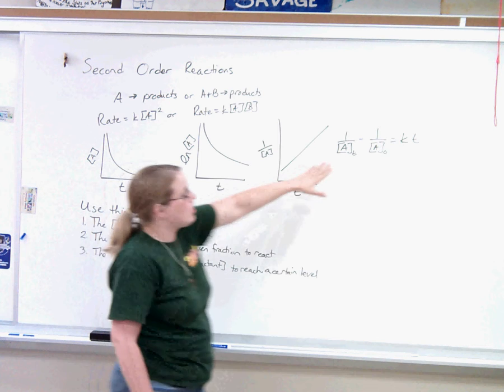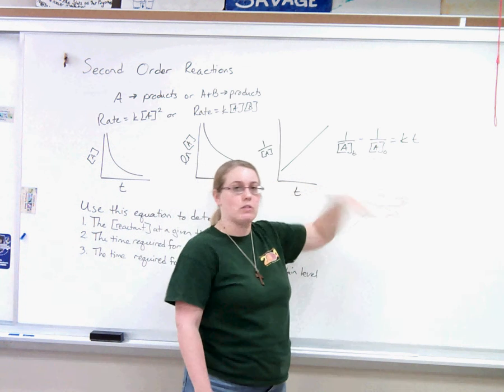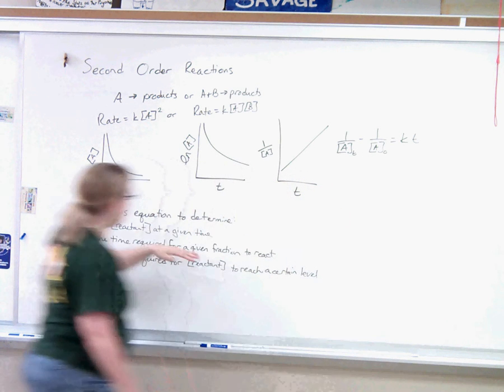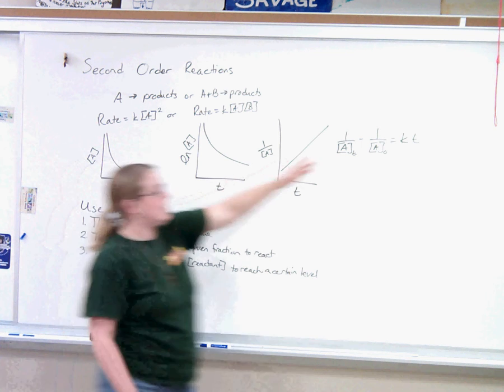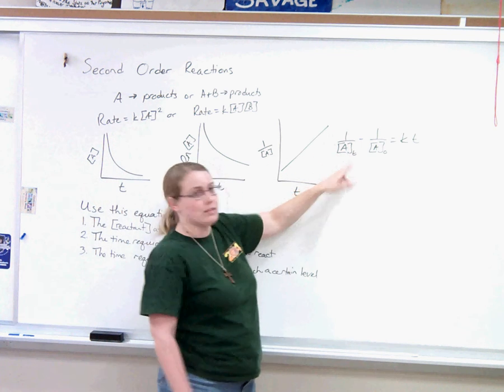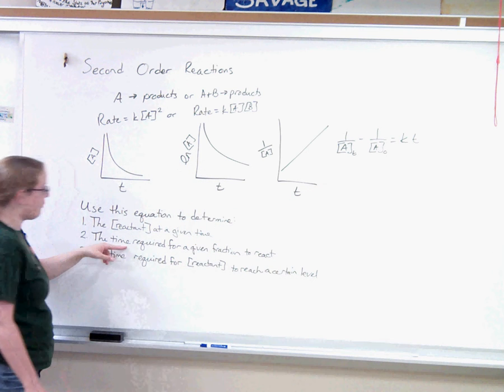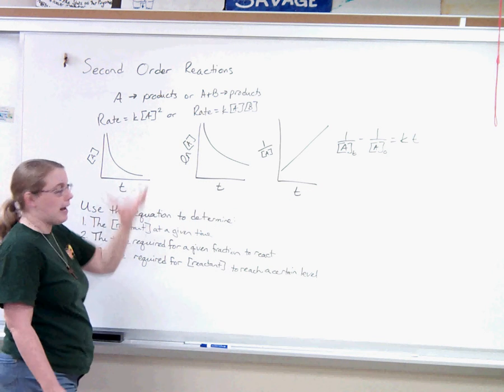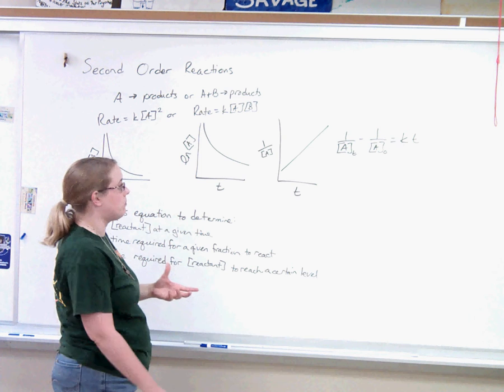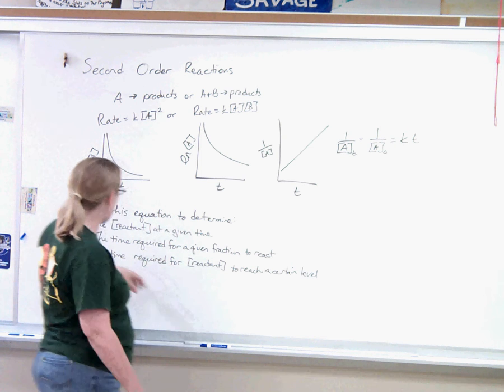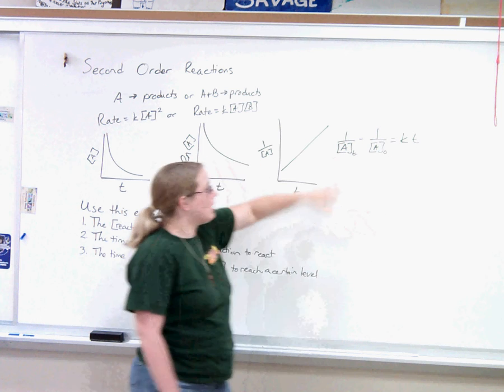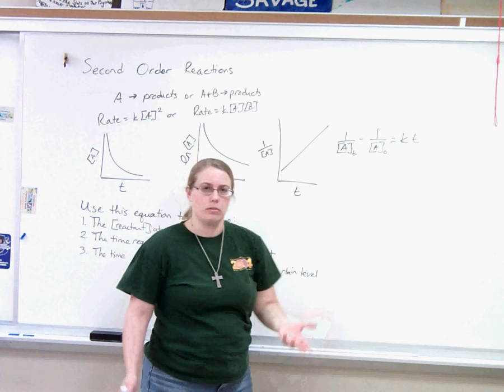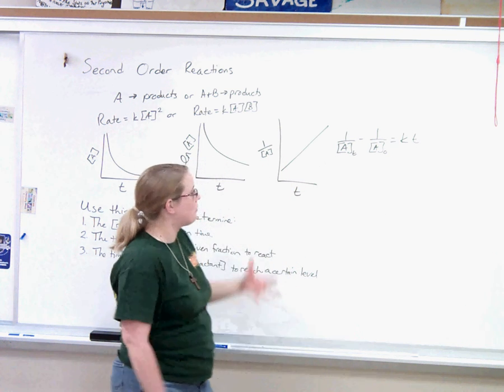We use this equation the same way we use the natural log equation for first-order. We can use it to find the concentration of the reactant at some time. So if we know what t is, we can find out what A sub t would be. We can use it to figure out how long it will take for half of this reaction to proceed, and we can use it to figure out how much time it will take for this to be a certain amount.